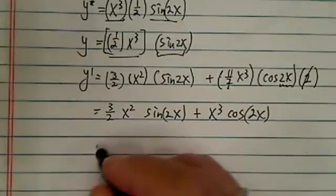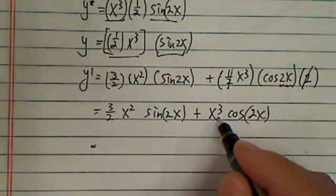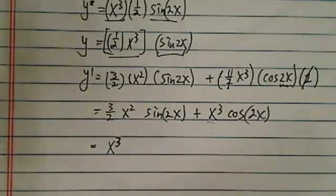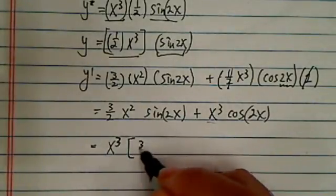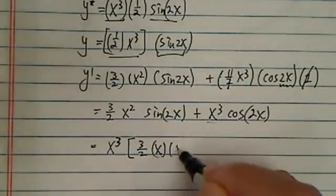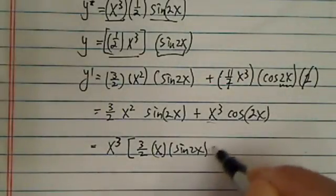Let's pull the common terms out. We have x² in common. Pull out x², and then you have (3/2)x left here and sin(2x) left here.